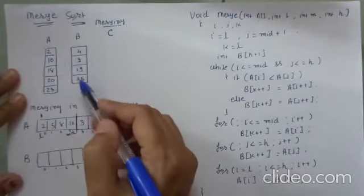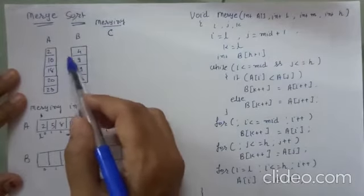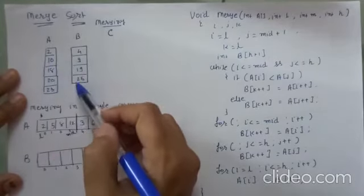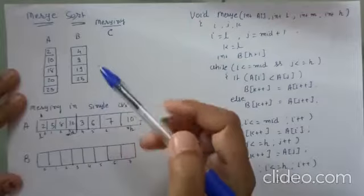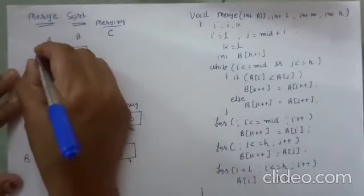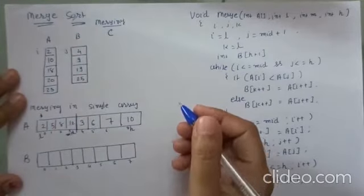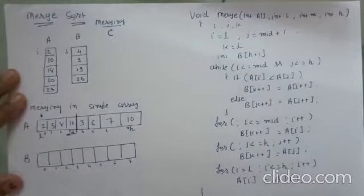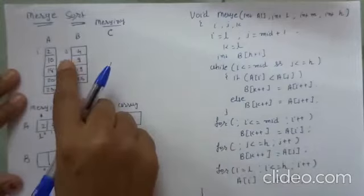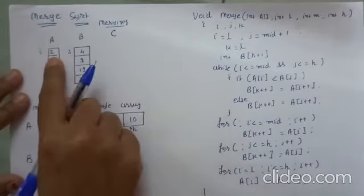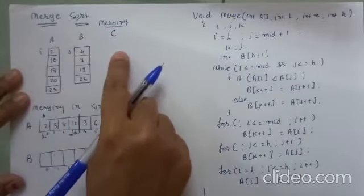These two are two different sorted arrays and I want to merge A and B and store them in array C in sorted form. For that, I will take one pointer I here and another pointer J here. I will compare A of I and A of J. If A of I is less than A of J then I will copy A of I into C, otherwise I will copy B of J into C.